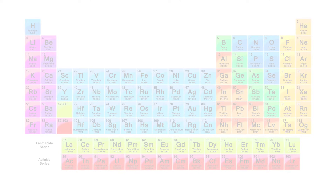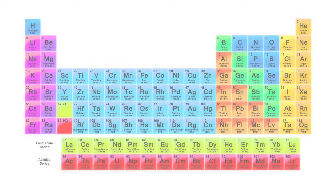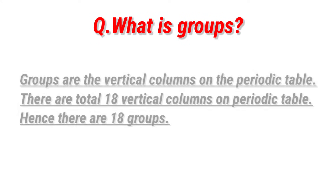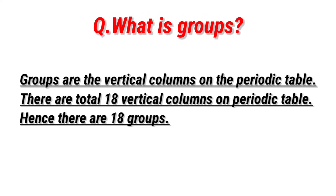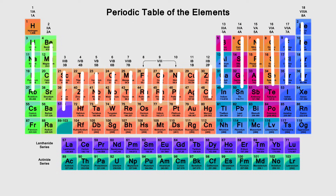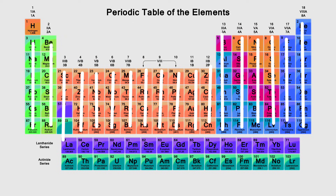Periodic table group names. In this video I will tell you the group names of the periodic table. Groups are the vertical columns on the periodic table. There are a total of 18 vertical columns. The elements lying in the same groups show similar chemical properties and they also have the same number of valence electrons.